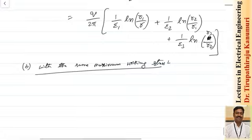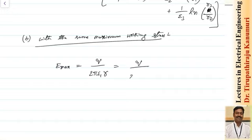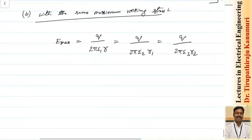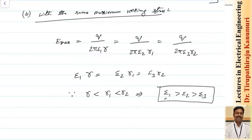For the same maximum working stress: q/(2π·ε1·r) = q/(2π·ε2·r1) = q/(2π·ε3·r2) = constant. This gives ε1·r = ε2·r1 = ε3·r2. Since r < r1 < r2, we must have ε1 > ε2 > ε3 — the material nearest the conductor must have the highest permittivity, decreasing outward.